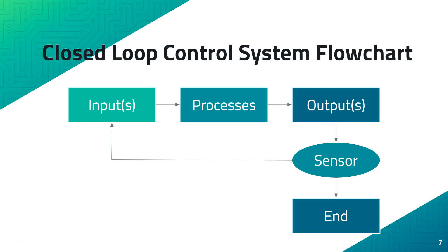Closed loop control systems use signals from outputs to re-input values into a process. It goes through the same thing as an open loop system, but then uses a sensor or something of that sort to determine whether certain conditions are met and takes courses of action based on that by re-inputting the outputs back into the loop.